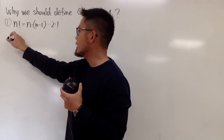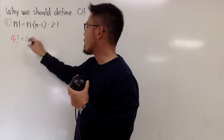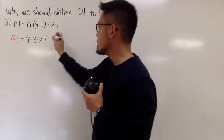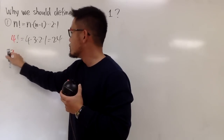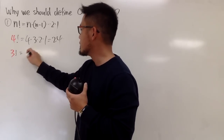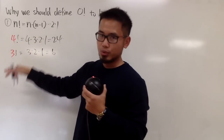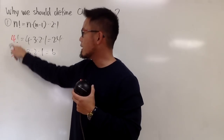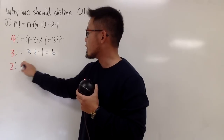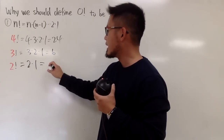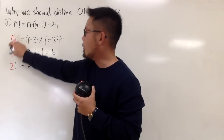Let me show you using numbers. If we have 4 factorial, that's 4 times 3 times 2 times 1, which gives us 24. Then 3 factorial is 3 times 2 times 1, which is 6. Next, 2 factorial is 2 times 1, which is 2. So we have 4, 3, 2 as our inputs, giving results 24, 6, 2.